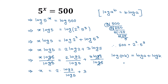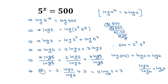Applying the change of base formula — log of a divided by log of b equals log base b of a — we can write log of 2 divided by log of 5 as log base 5 of 2. Therefore x equals 2 times log base 5 of 2 plus 3. This is the solution to our given equation.